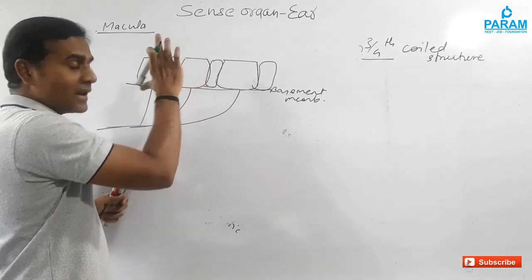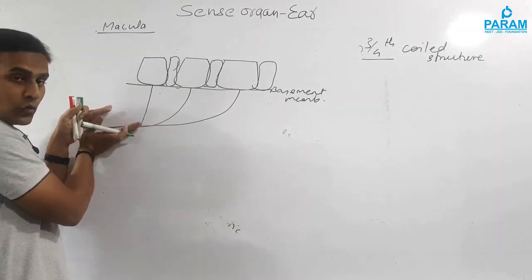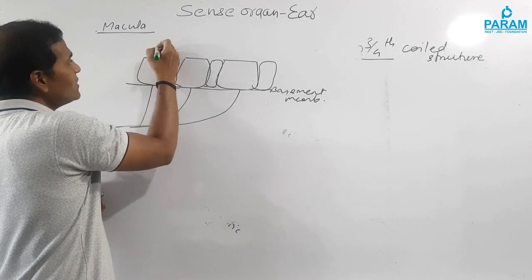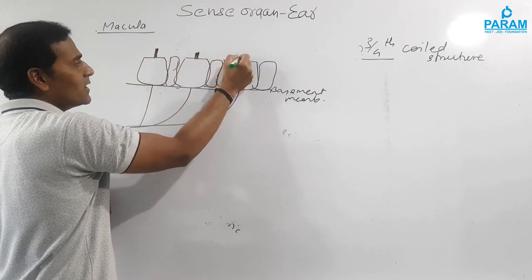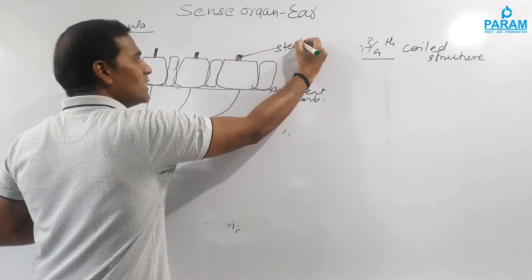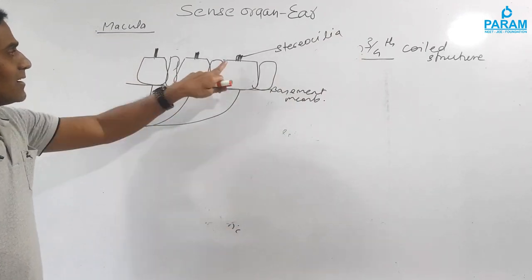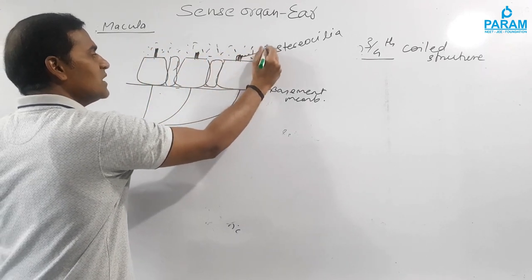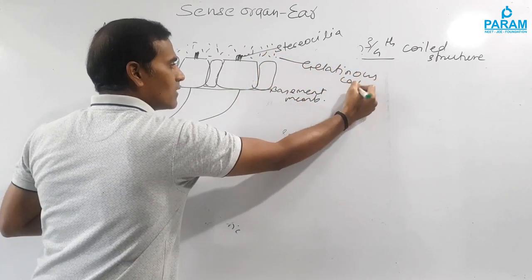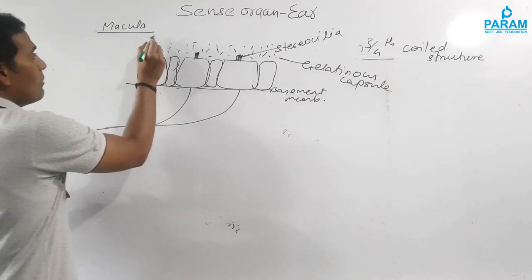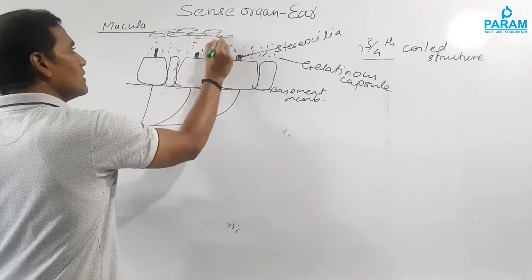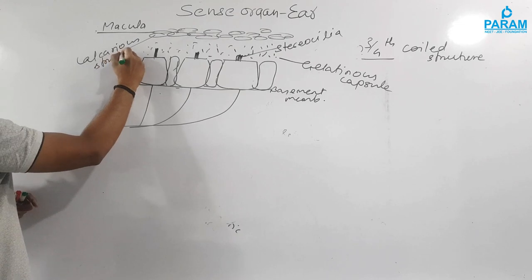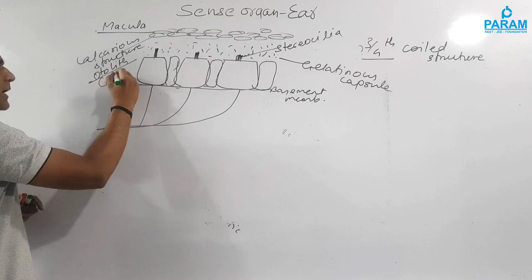The ends of these cells give rise to neurons which connect to one another to form nerve fibers associated with the hearing area. Above these cells, there are short structures called stereocilia — the sensory structures. Above the stereocilia there is a gelatinous capsule made of semi-fluid material, and above that there is a calcareous structure called the otolith, made up of calcium carbonate.